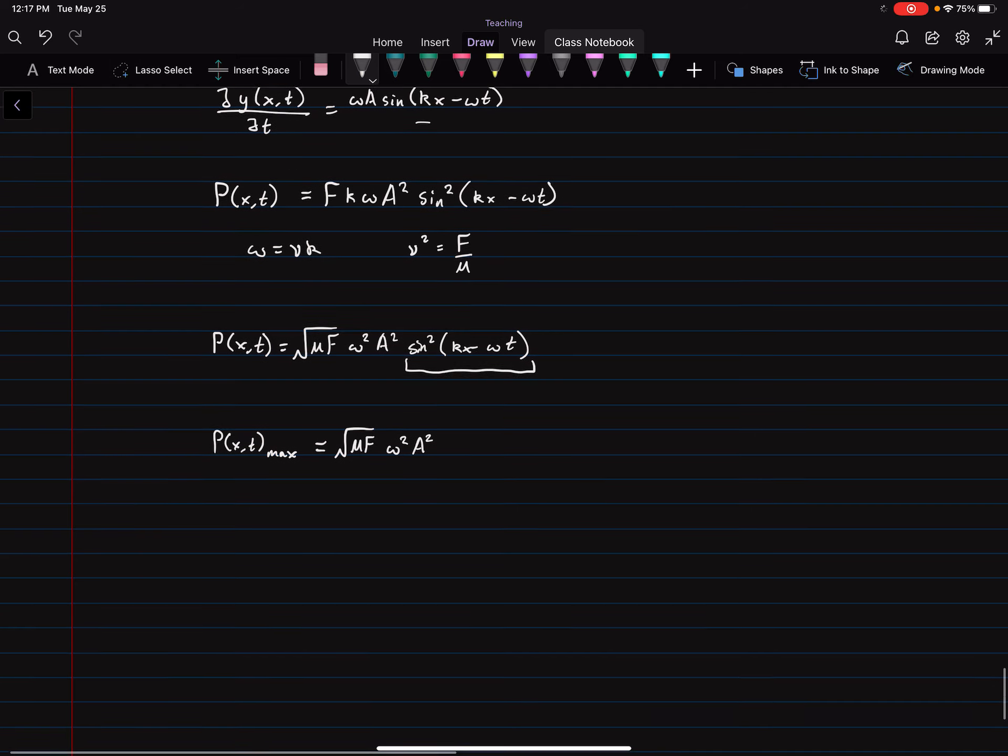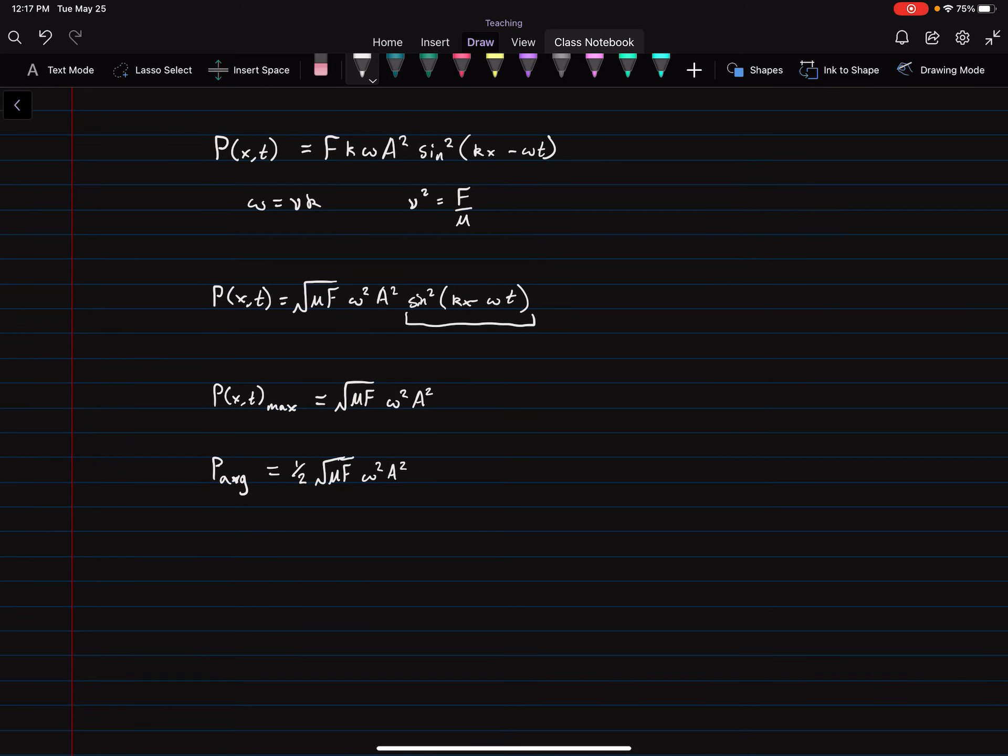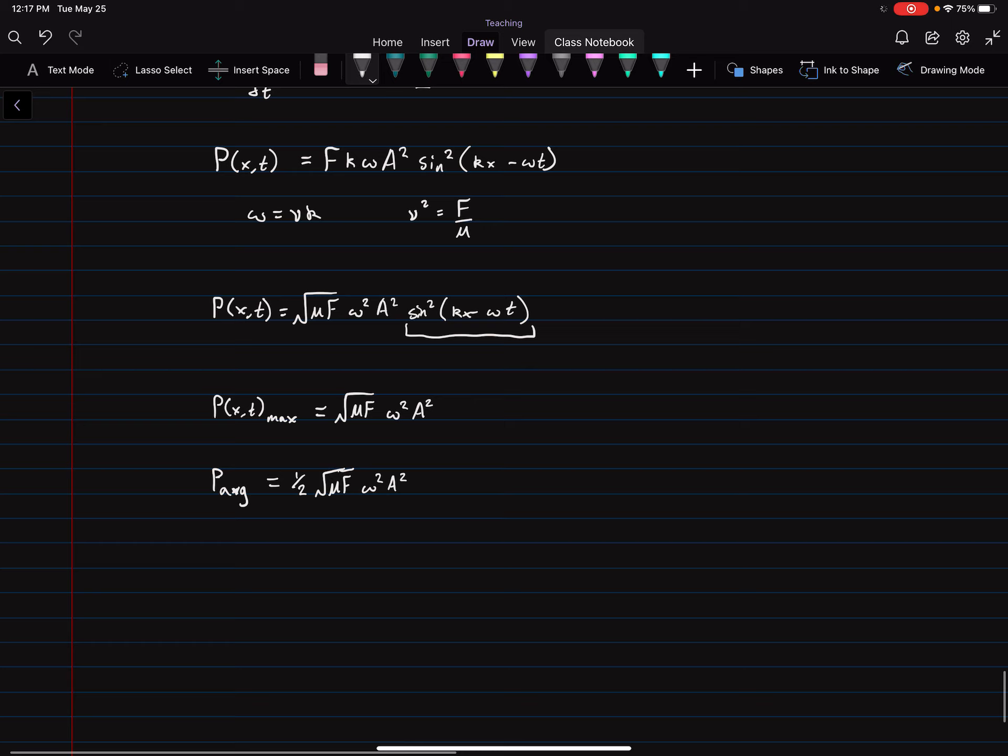We can also say that the average power P average is equal to 1 half of the max, which is 1 half square root mu F omega squared A squared.